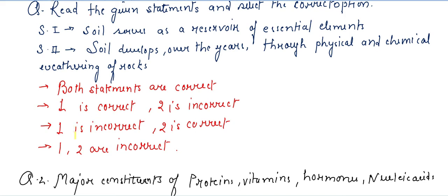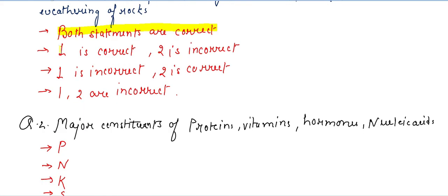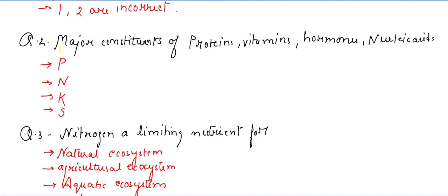The options are: both statements are correct; statement one is correct and second is incorrect; statement one is incorrect and second is correct; or both are incorrect. The answer is that both statements are correct — soil serves as a reservoir of essential elements, and soil develops over the years through physical and chemical weathering of rocks.